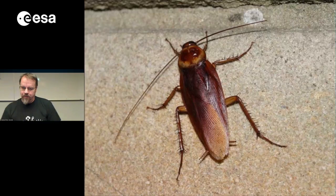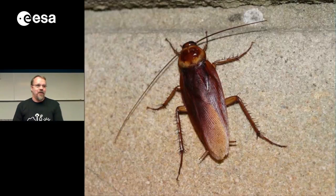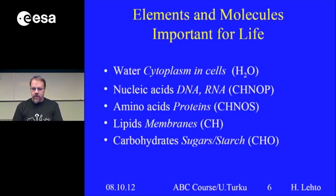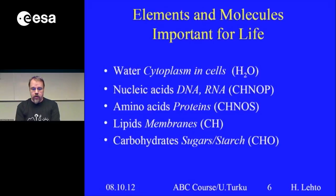Elements of life. We know what life is when we see it, at least in most cases. It can be really tiny — most of life is small. Looking at bacteria from a flower pot, if you look at life in general it has many characteristics common to all life we know. First of all, it has some molecules that are common: water, nucleic acids, amino acids, lipids and carbohydrates.